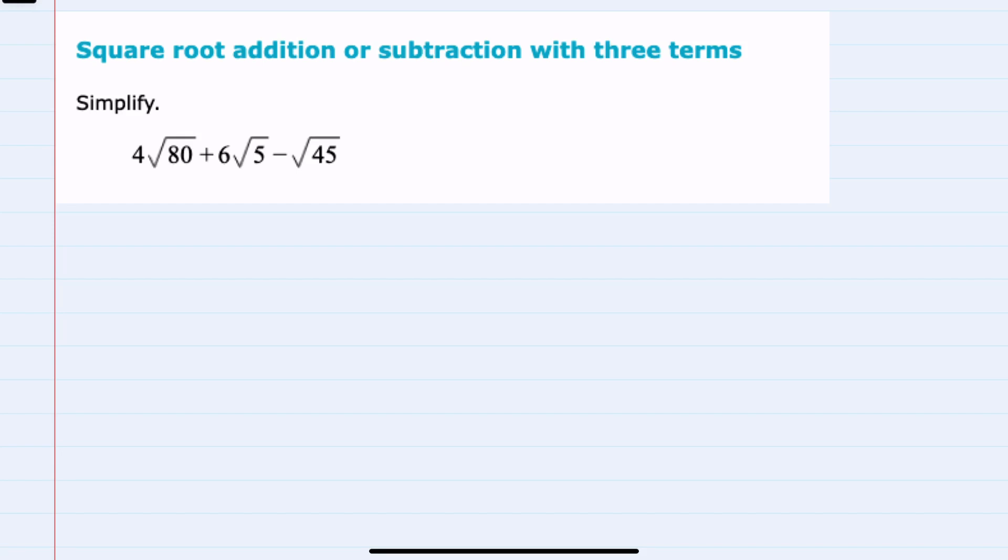In this video, I'll be helping you with the problem type called square root addition or subtraction with three terms. In this example, we are simplifying 4√80 + 6√5 - √45.